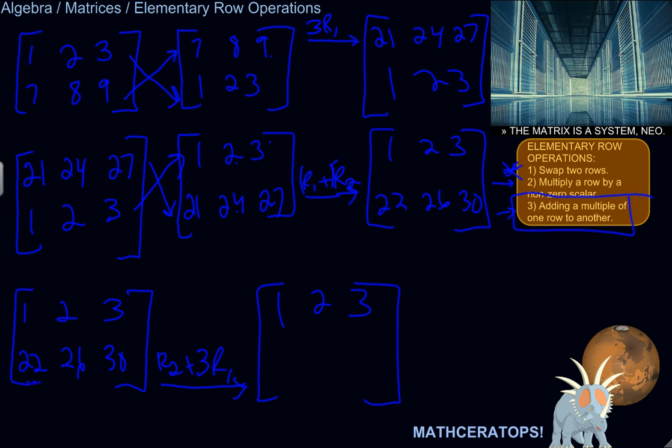22 plus 3 times 1. 3 times 1 is 3, plus 22 is 25. Okay. 26 plus 3 times 2. 3 times 2 is 6, plus 26 is 32. So I've added a multiple of row 1 to row 2 to create the new row 2.